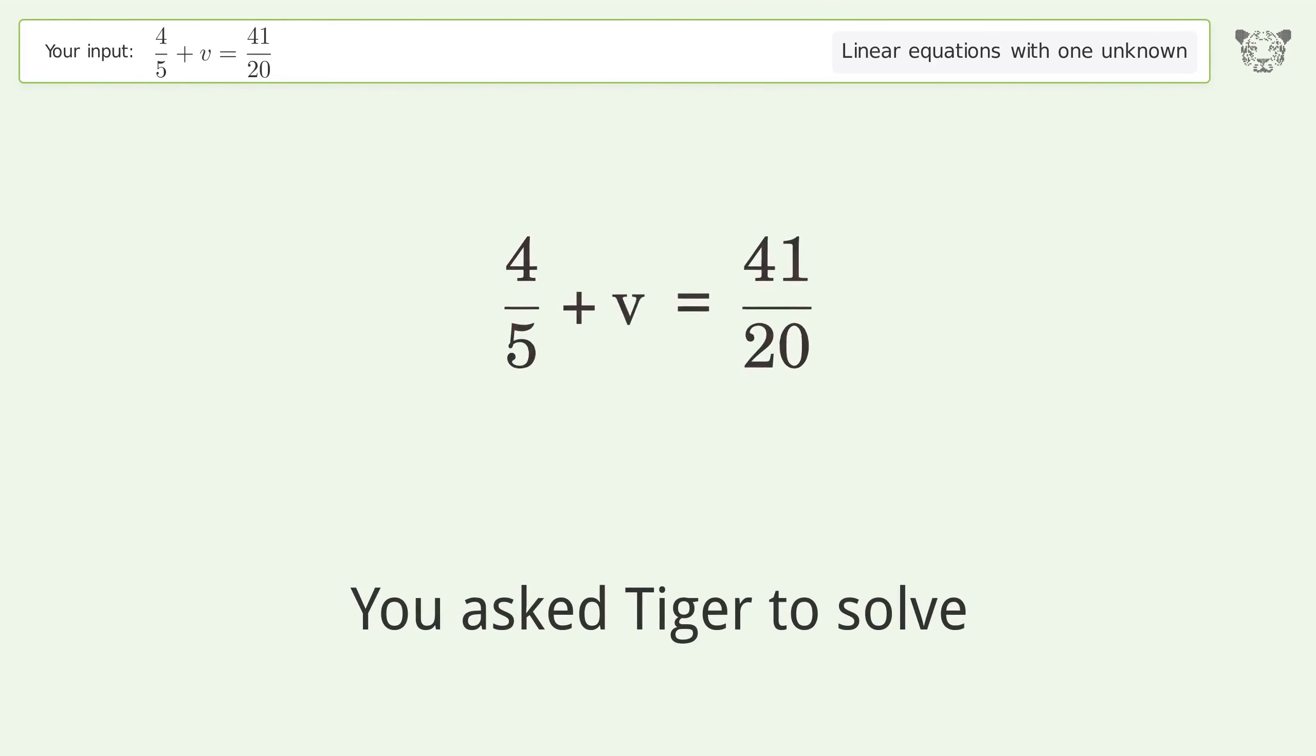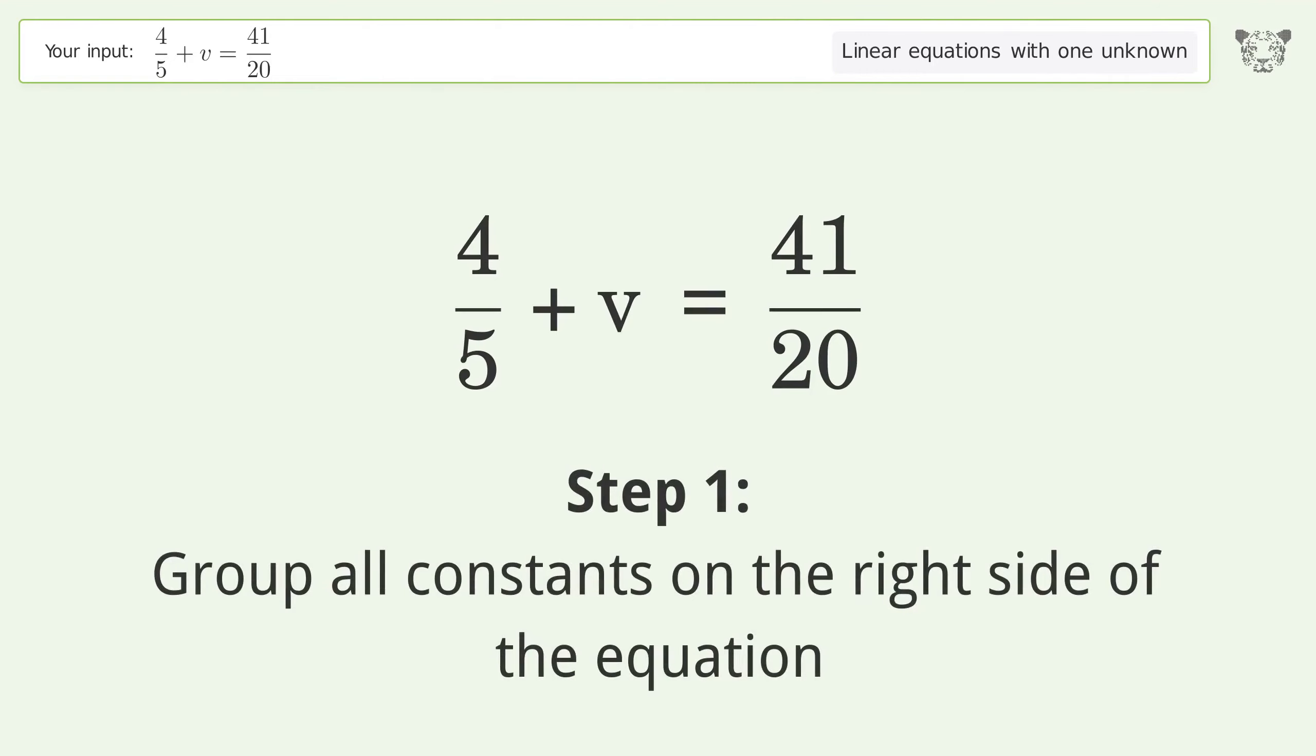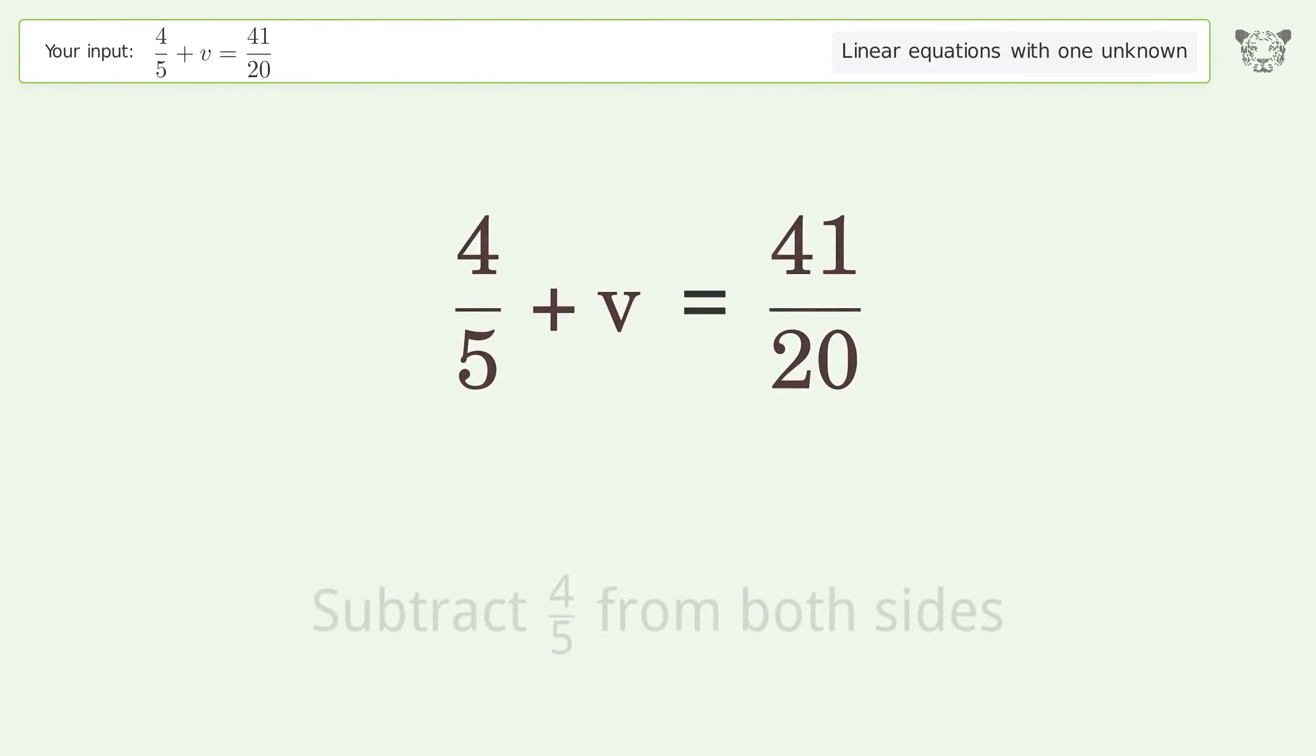You ask Tiger to solve this, which deals with linear equations with one unknown. The final result is v equals 5 over 4. Let's solve it step by step. Group all constants on the right side of the equation. Subtract 4 over 5 from both sides.